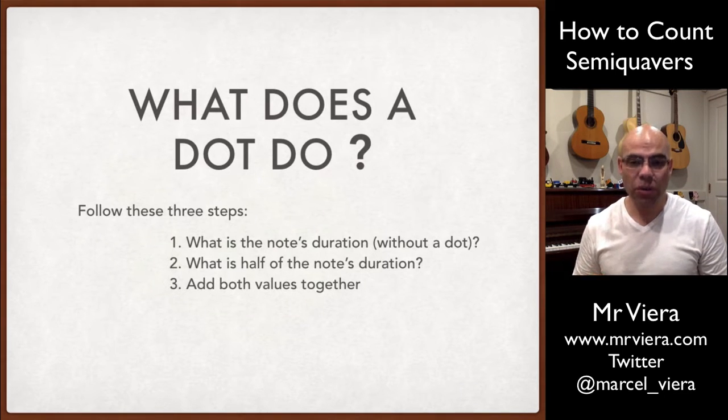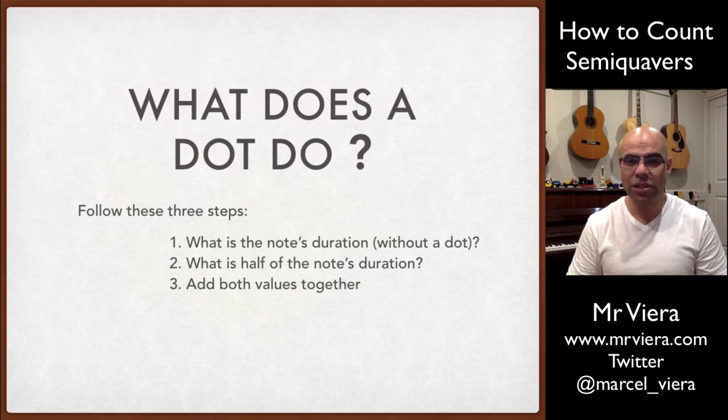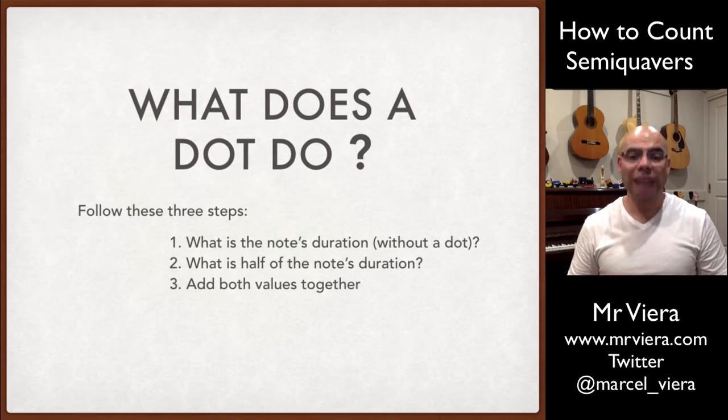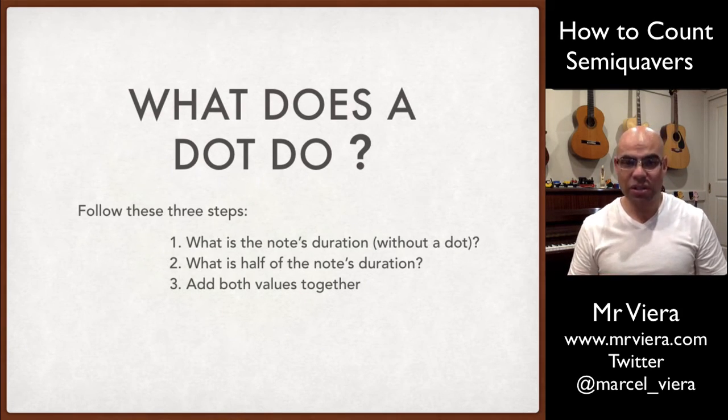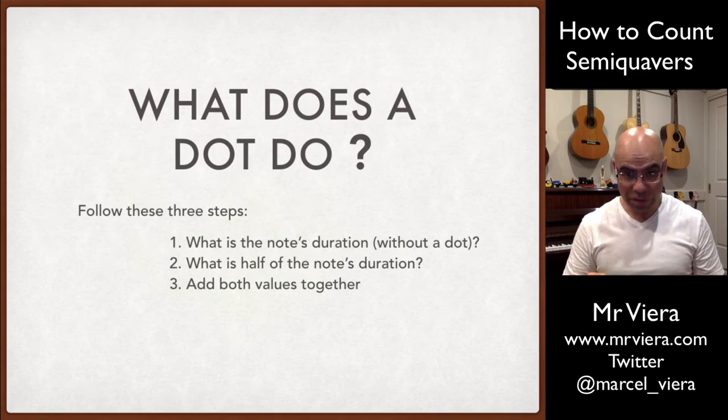Step one is what is the note's duration without a dot? So just its original duration. Then what is half of the note's duration? So you divide it by two to get half and then you add both of those together.